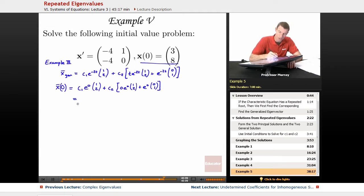A lot of these terms drop out. The e^0s are all going to be 1, so I get c1 times (1, 2), plus c2. This term completely drops out because it's multiplied by 0. Then I just have c2 times (0, 1), and that's supposed to equal (3, 8).